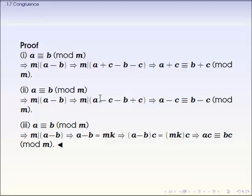So ac minus bc is a multiple of m, because m times kc, and kc is another integer. So by the definition of congruency, we can say ac is congruent to bc modular m. That's the end of the proof.